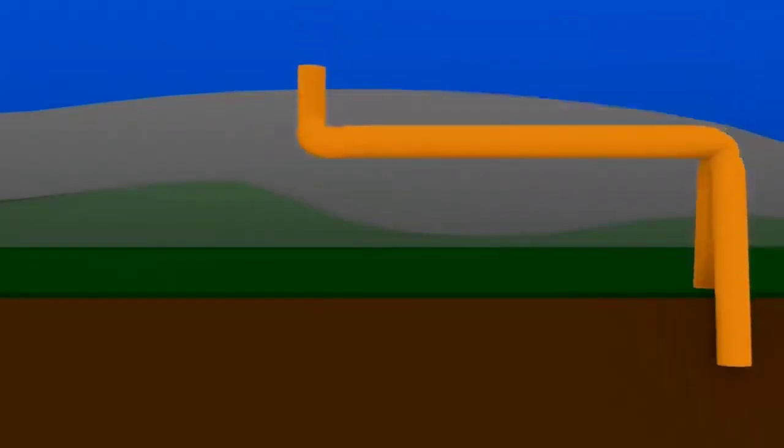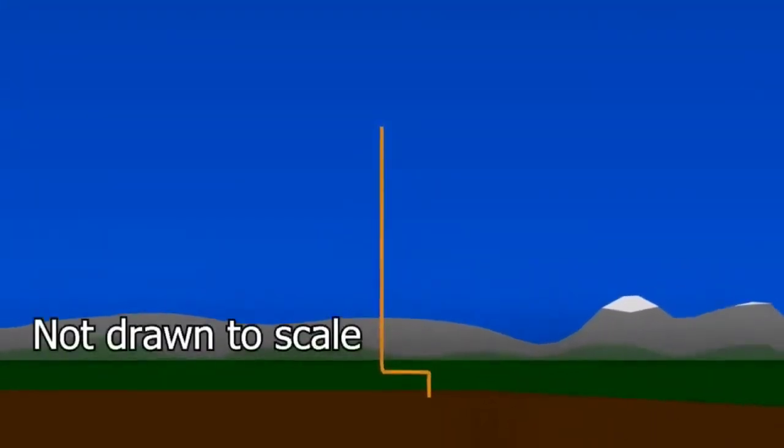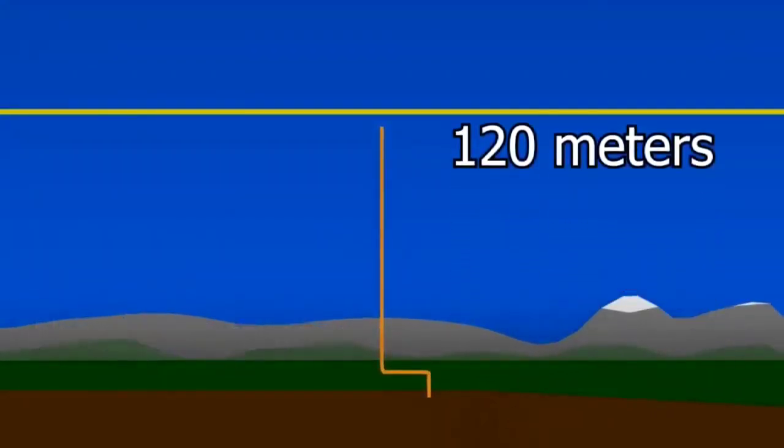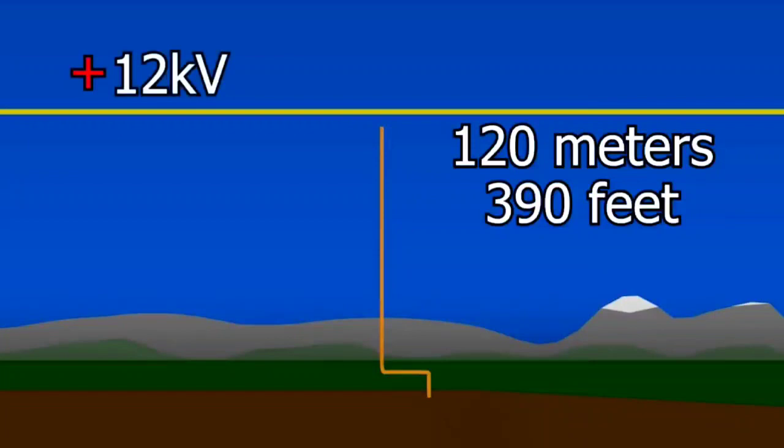To take advantage of this atmospheric electricity, we electrically connect one end of a wire to the ground and lift the other end up into the air. In our case, we got good results at around 120 meters or 390 feet up. At 100 volts per meter or 100 volts per yard, that's 12,000 volts between that height and the ground.